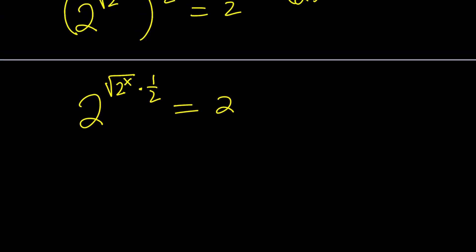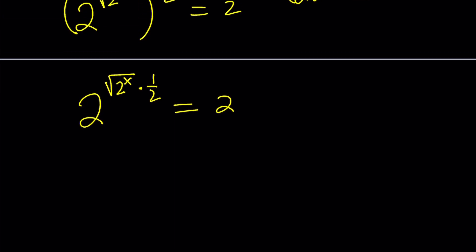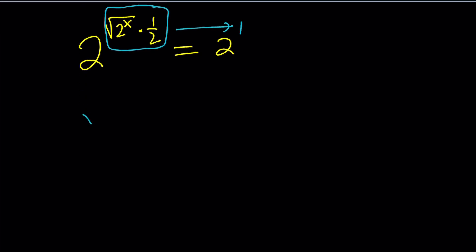Now, we get into a position where we have the same bases. So we can go ahead and put the invisible base, which is 1. And now, set these equal to each other. So this should equal 1. Let's go ahead and set up another equation where we have square root of 2 to the power x times 1 half is equal to 1. And then we can just go ahead and solve for x.